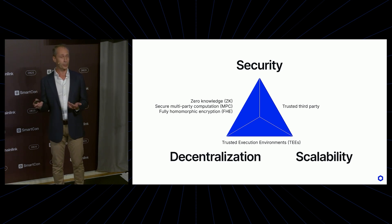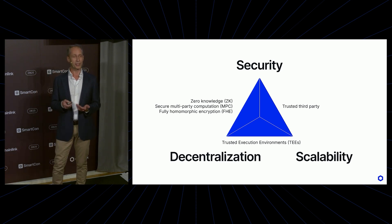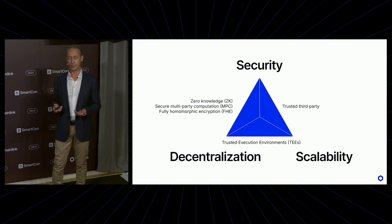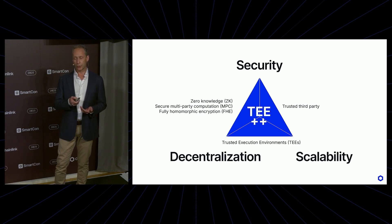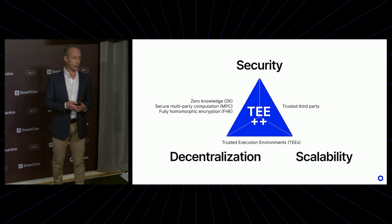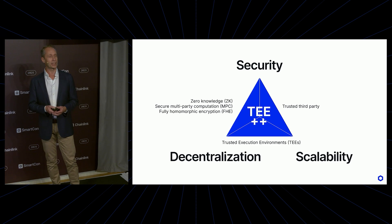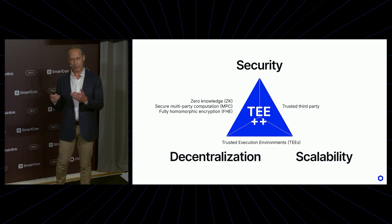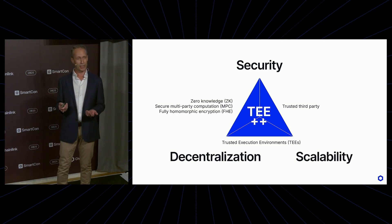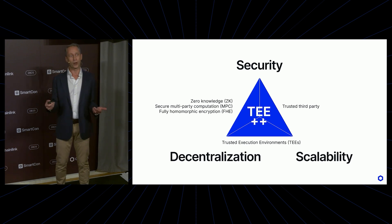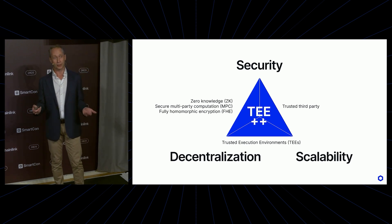Efficiency-wise, they're very performant — they essentially run at native processor speed. So what we are doing in this first incarnation of Chainlink Confidential Compute is relying on these Trusted Execution Environments, but adding more safeguards to make sure that they're really, really secure.